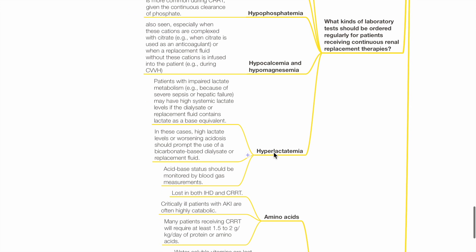Hyperlactatemia may occur in patients with impaired lactate metabolism such as in severe sepsis or hepatic failure especially if the dialysate or replacement fluid contains lactate as the base equivalent. In these cases, use bicarbonate-based dialysate or replacement fluid and monitor acid-base status regularly by blood gas measurements.